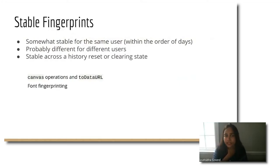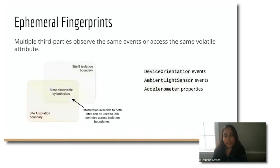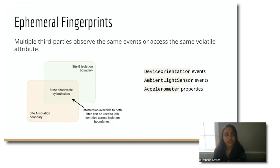There are two kinds of fingerprints: stable and ephemeral. Stable fingerprints extract information that's pretty stable within the order of days and is likely to be different for different users. Clearing your history or state does not eliminate your fingerprint because it's stable across all of that. Common ways of extracting stable fingerprints include canvas operations — a site could perform canvas operations then read back the result as pixels to compute a fingerprint based on your graphics stack — and font fingerprinting is another common technique. There's also a lesser-talked-about form: correlating or joining user identifiers by observing events or volatile attributes across site boundaries, such as device orientation, ambient light sensor events, or accelerometer readings.